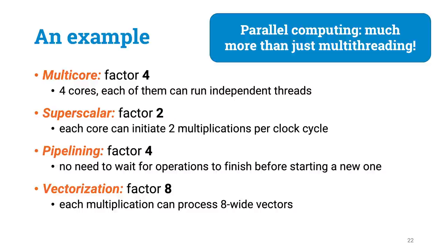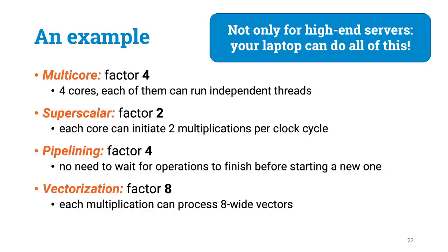So one of the key take-home messages is that parallel computing is a lot more than just multi-threading. If you just try to exploit multiple CPU cores, you are only going to get improvements by a factor of 4. While by exploiting all parallel computing resources, you can get improvements by a factor of 256. The second message is that parallel computing is not only for high-performance supercomputers — these kinds of parallel computing resources you can nowadays find in any desktop computer, any laptop, even any modern mobile phone. There is tons of potential that we are missing unless we pay attention to parallelism when writing our programs. In this course, you are going to learn how to actually benefit from all of this hidden potential in modern computers.